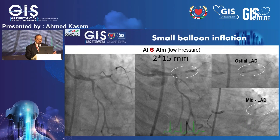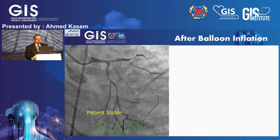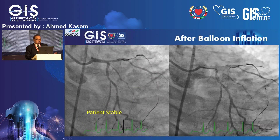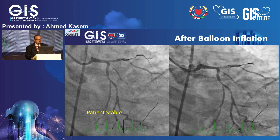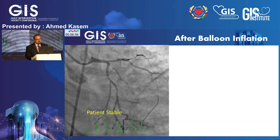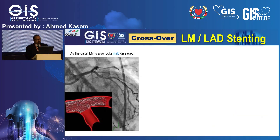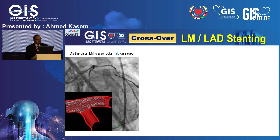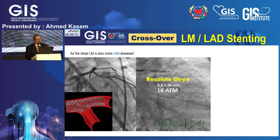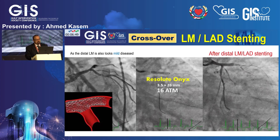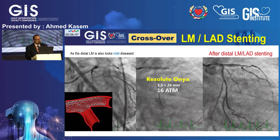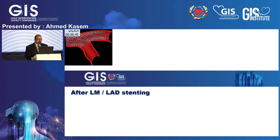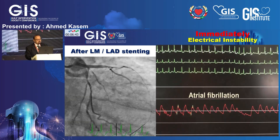Given the tight underlying lesion, I decided to use a small balloon at low atmospheric pressure — only 6 atmospheres. After ballooning, the patient was stable with improvement of lesion severity. I decided to proceed with stenting, deploying a 3.5×26 mm stent to the distal left main at 16 atmospheres.